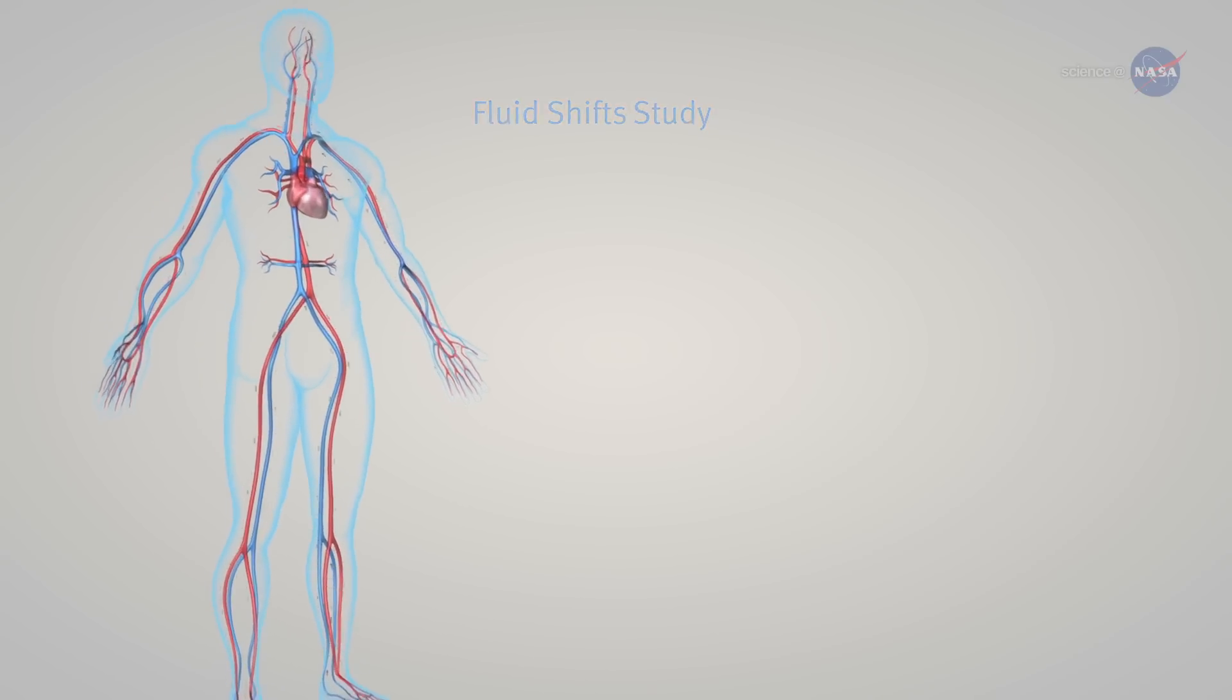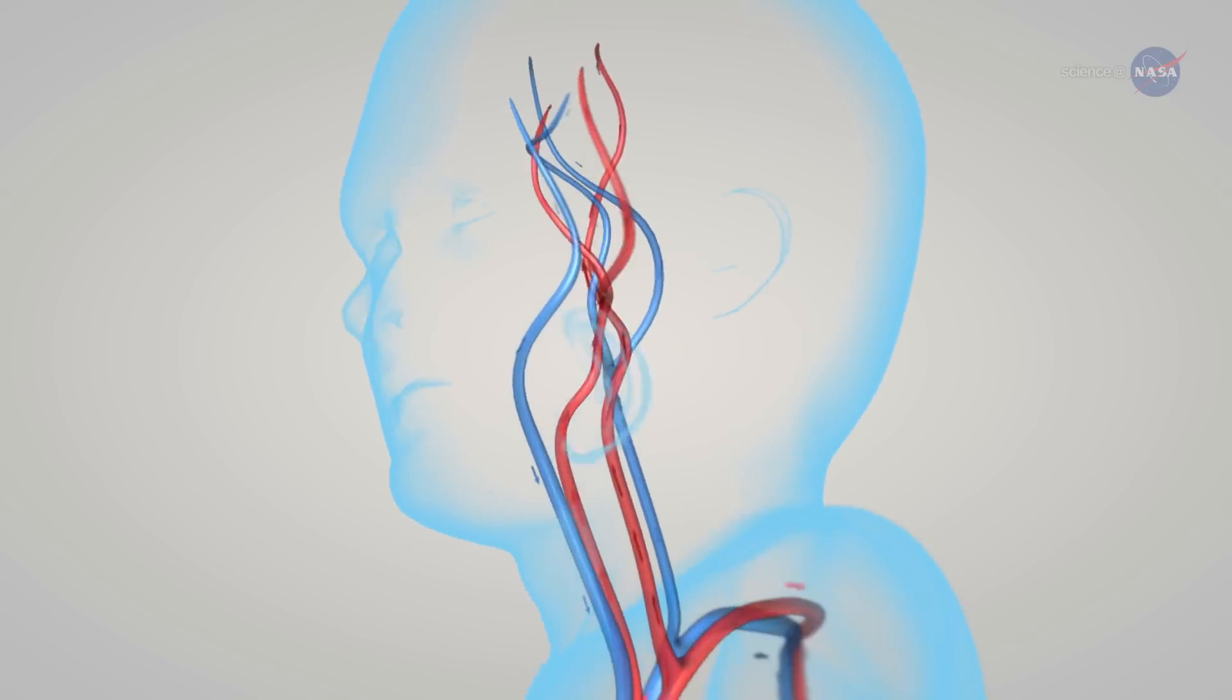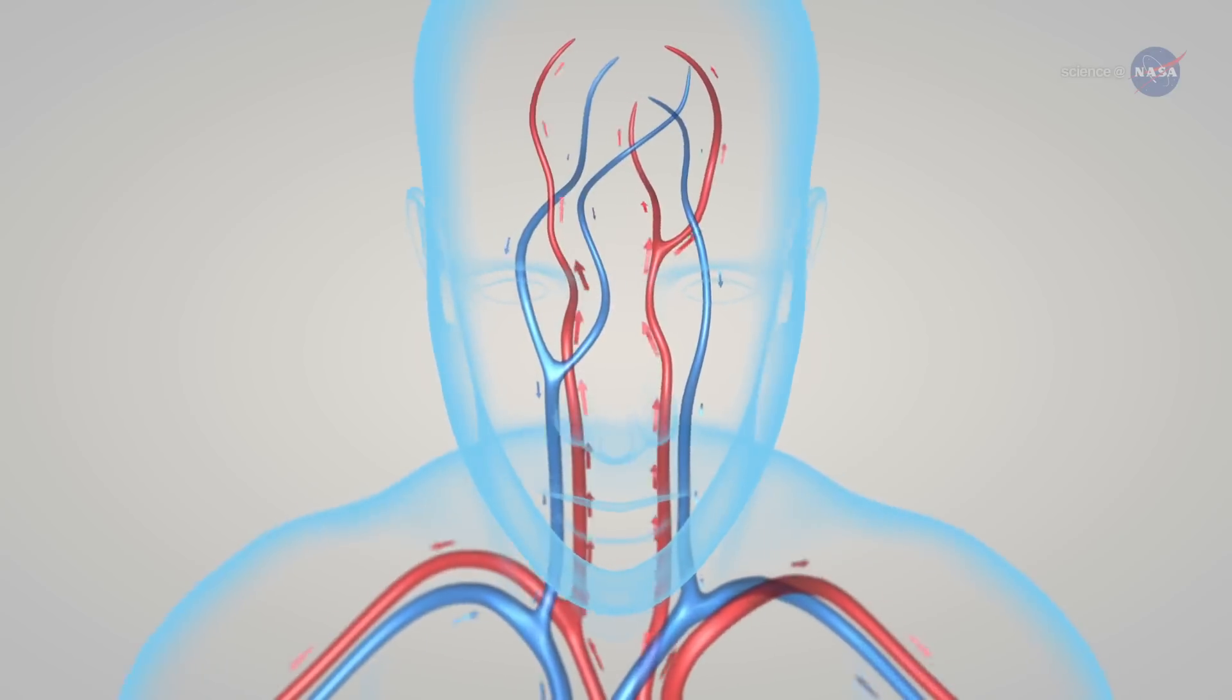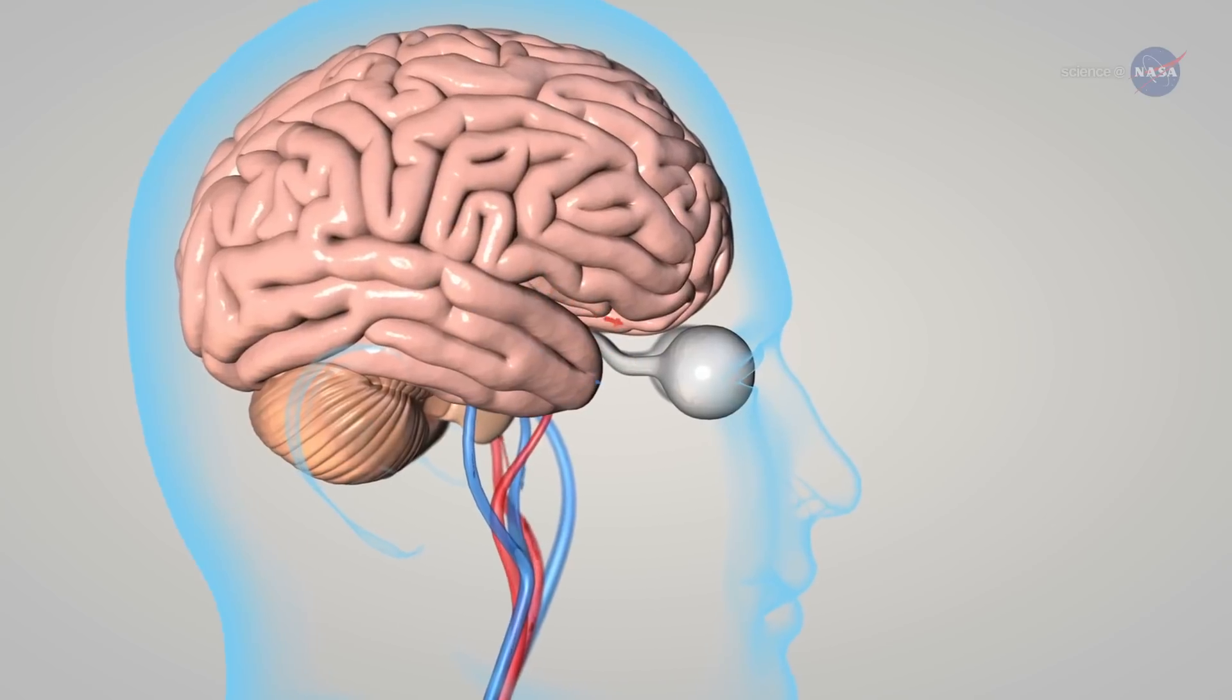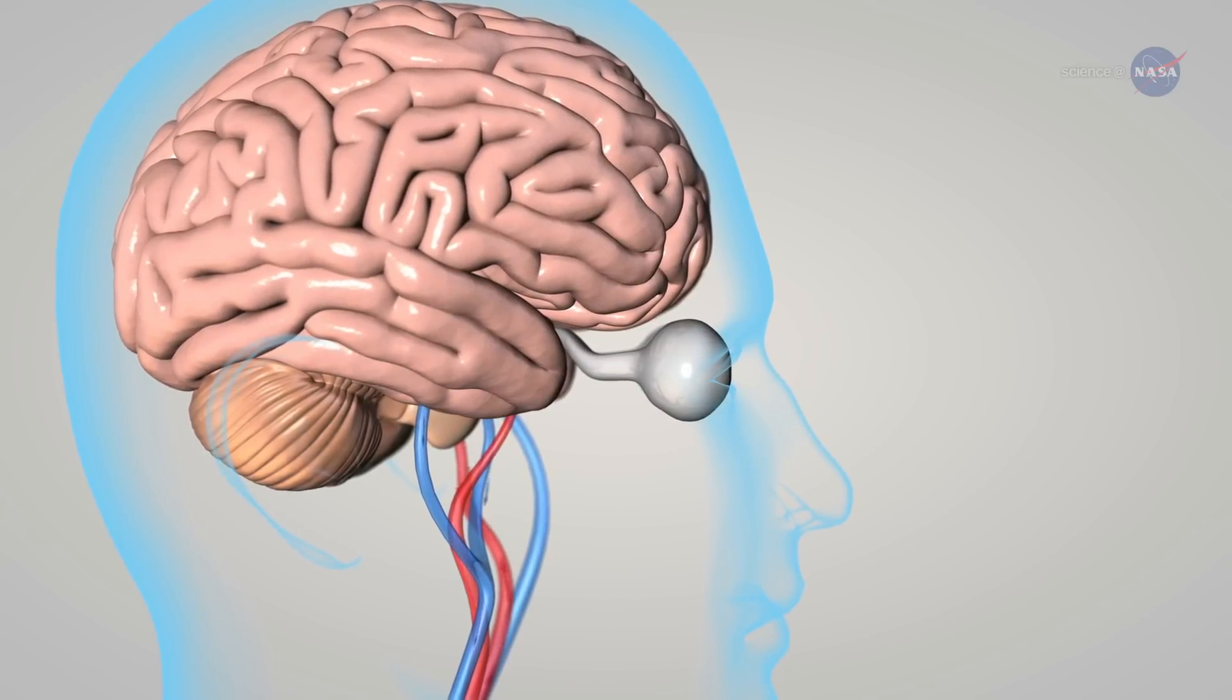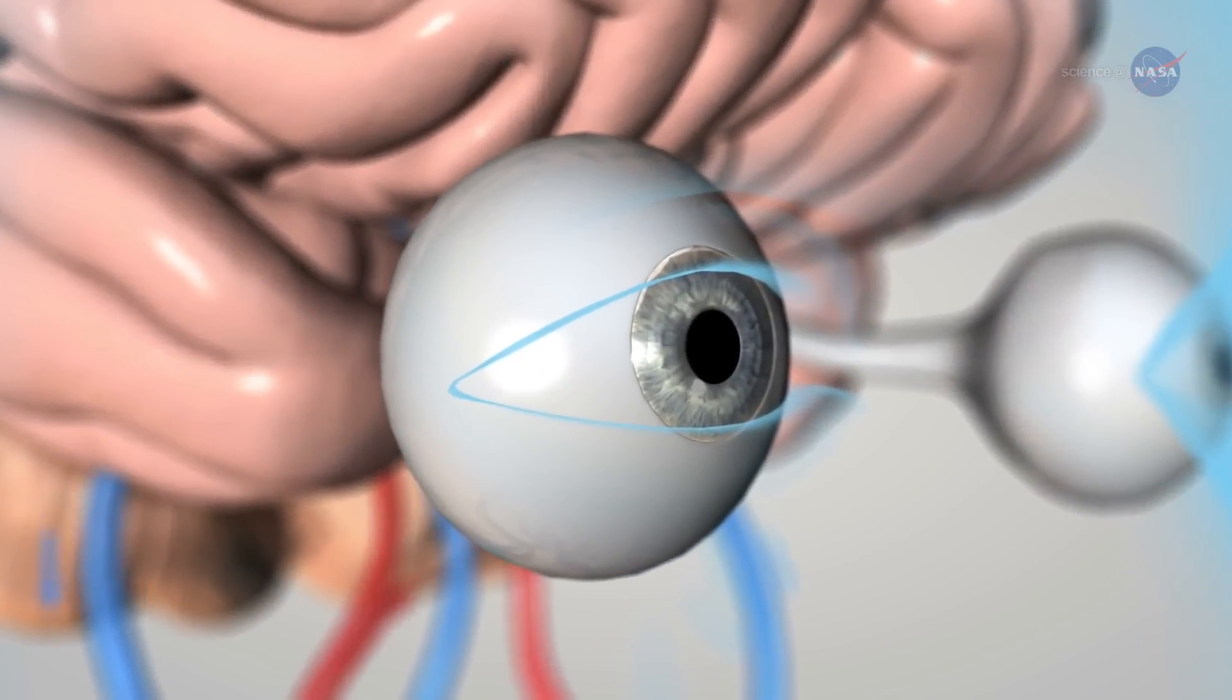During space travel, the fluids of the body shift toward the head and even move across blood vessel and cell membranes differently than they do on Earth. Scientists hypothesize that this headward shift of blood and other fluids causes increased pressure in the brain, pushing on the back of the eye and causing it to change shape. The retina swells and the entire eye slightly flattens, resulting in farsightedness and maybe those glasses.